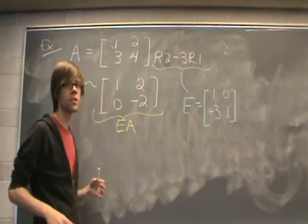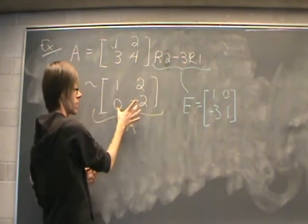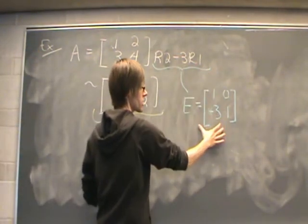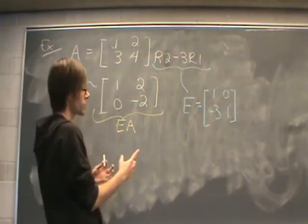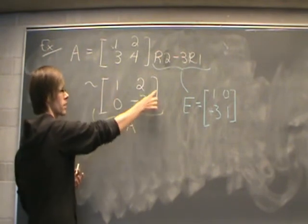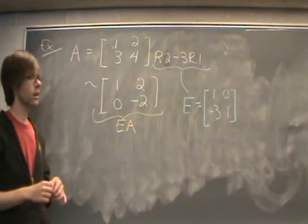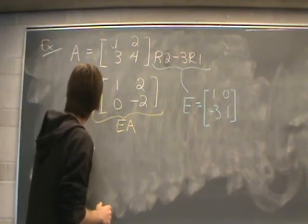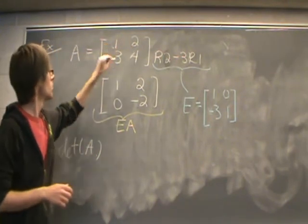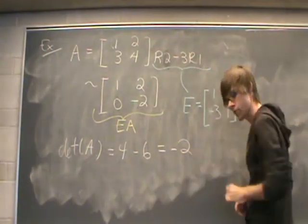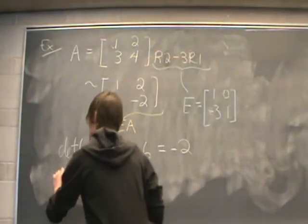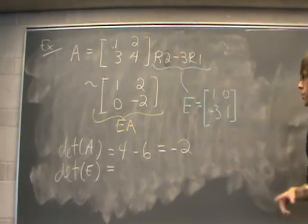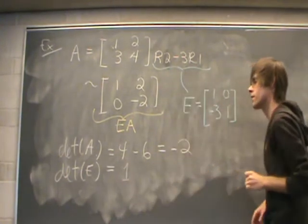I started out with a 2 by 2 matrix A. I've done one elementary row operation on it: row 2 minus 3 times row 1, and I'm going to represent this elementary row operation by an elementary matrix E. If we do the multiplication E times A, we will get this matrix EA. The determinant of A is 4 minus 6, which is negative 2. E is a lower triangular matrix, so the determinant is the product of the numbers on the main diagonal, giving us determinant of E equal to 1.